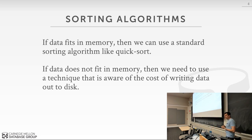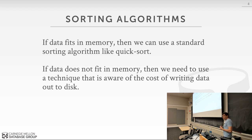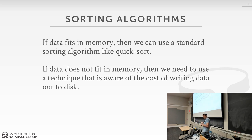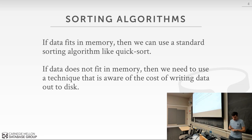Algorithms like quicksort are not what you want to use when spilling to disk, because quicksort is all about doing random access — it assumes everything is in memory so you can swap things freely, with no IO. But in a database system, we need to be mindful of this because we may have to spill to disk. So that's what we're going to focus on today.